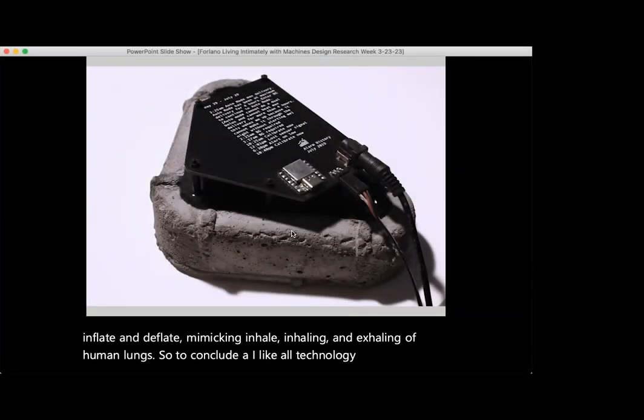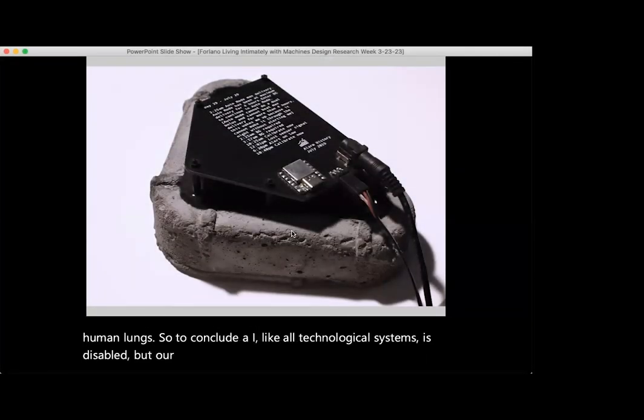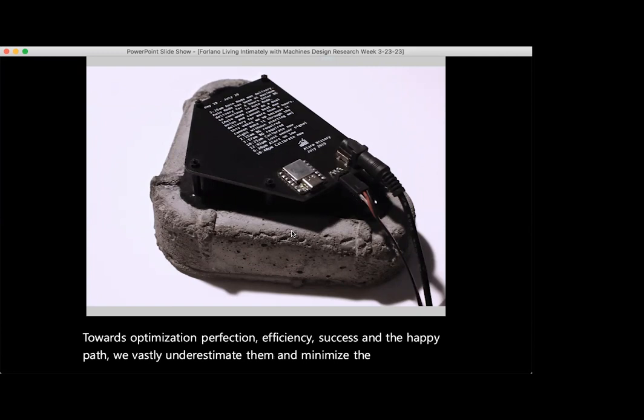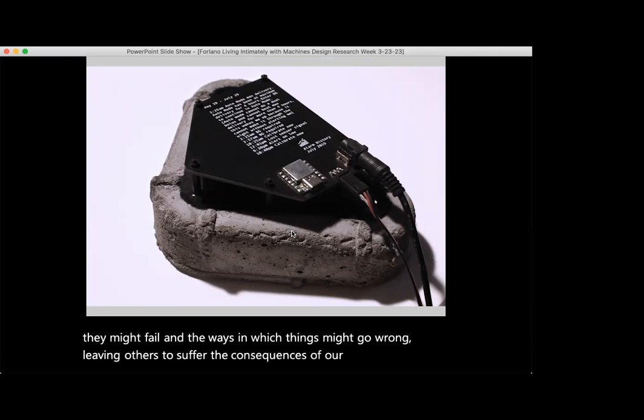AI, like all technological systems, is disabled, but our design processes are so overwhelmingly skewed towards optimization, perfection, efficiency, success, and the happy path. We vastly underestimate and minimize the ways in which they might fail and the ways in which things might go wrong, leaving others to suffer the consequences of our actions.